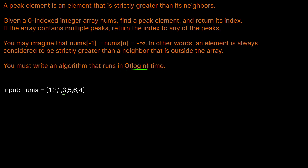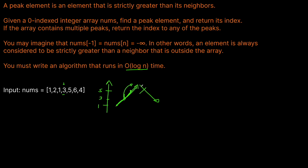We can actually use binary search here and be a little clever. Let's pick the middle element — it's three, the midpoint. We check: is three a peak element? Is it greater than its left neighbor? Yes. Is it greater than its right neighbor? No, because we have five to the right. So this isn't a peak, but we notice we're in an increasing sequence. Since a peak must exist, if we keep going right we'll eventually hit it — we'll have to come down at some point.